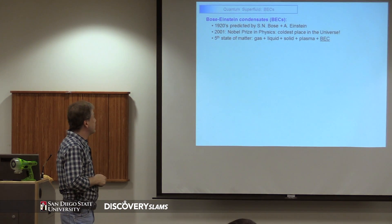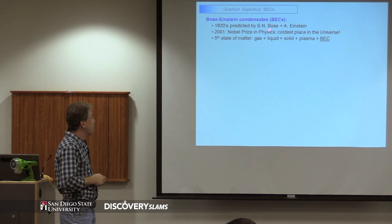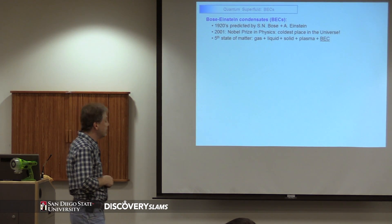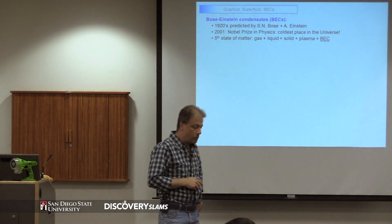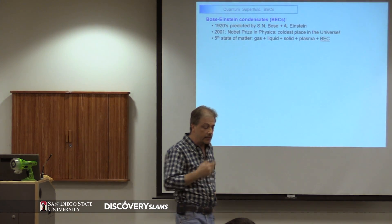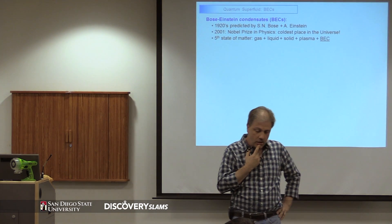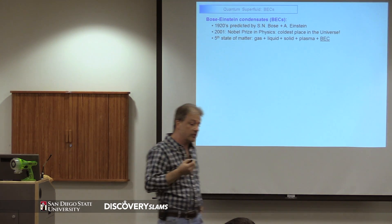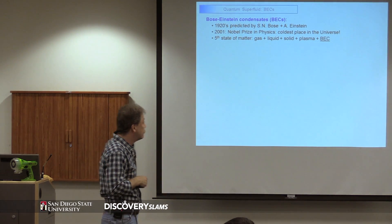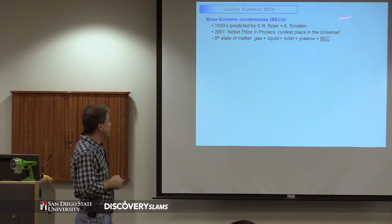This type of behavior was predicted almost a century ago by physicists Bose and Einstein. And it was not until 1995 that physicists were able to produce this condensate. The reason is because you need extremely, extremely low temperatures.